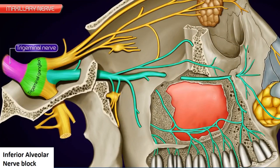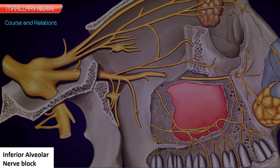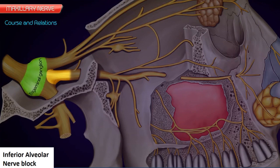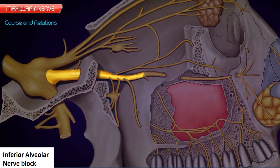The second division of the trigeminal nerve is purely sensory. It arises from the convex anterior border of the trigeminal ganglion. The nerve leaves the middle cranial fossa through the foramen rotundum to reach the pterygopalatine fossa. It traverses straight in the upper part of the fossa and enters the orbit through the inferior orbital fissure.